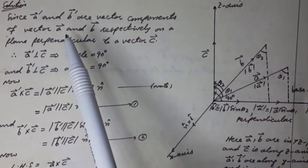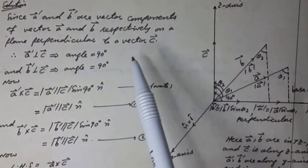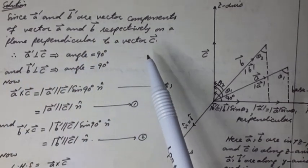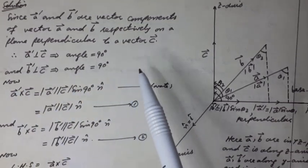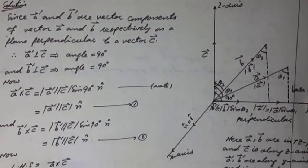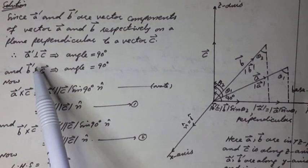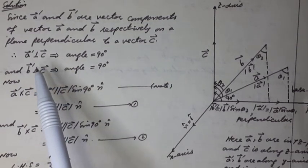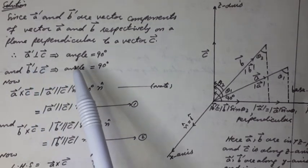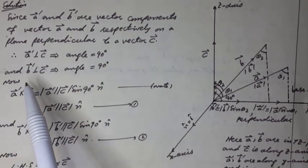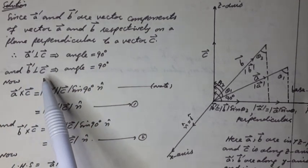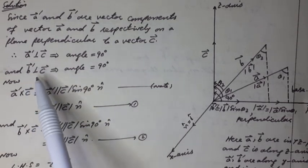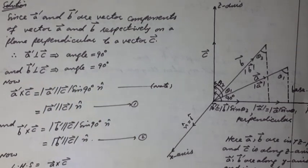Since a-dash vector and b-dash vector are vector components of vector a and b respectively on a plane perpendicular to vector c, therefore a-dash vector implies the angle between a-dash and c vector is 90 degrees, and b-dash vector perpendicular to c vector also implies the angle between b-dash and c is 90 degrees.